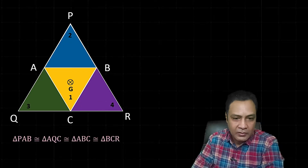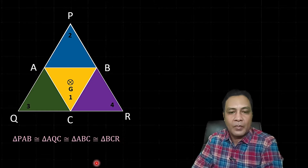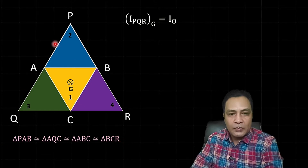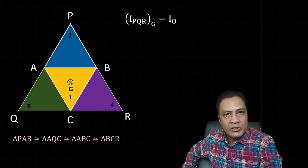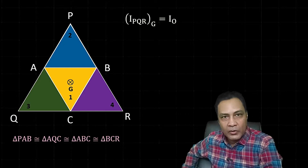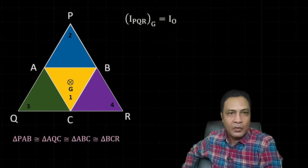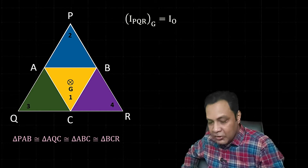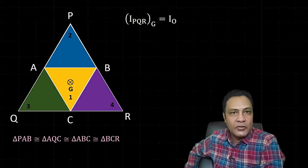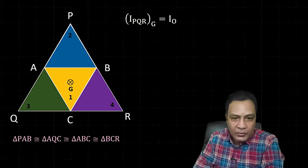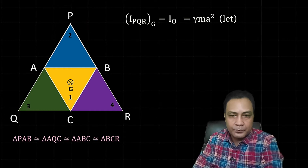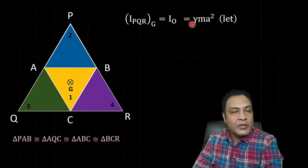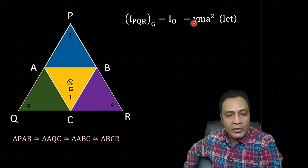These four are congruent triangles and we assumed the moment of inertia is I₀. Moment of inertia has dimensions of mass times length squared. For any shape, the formula is some number times mass times some length squared. So let's assume the moment of inertia is γ·M·A², where γ is some number we need to find.